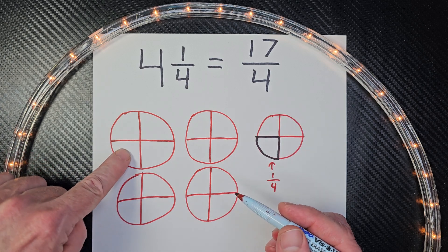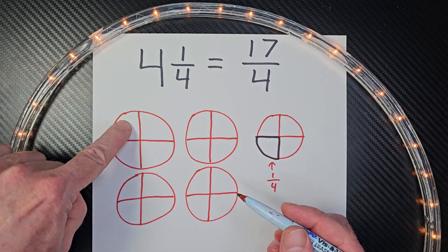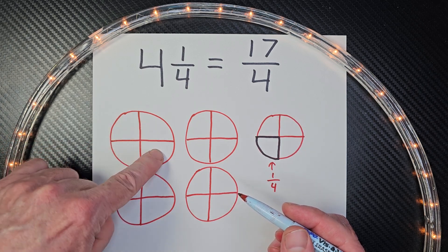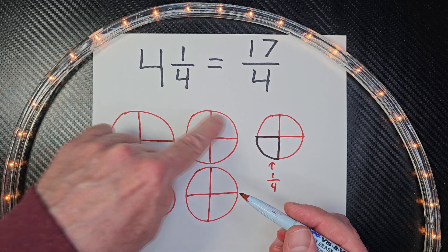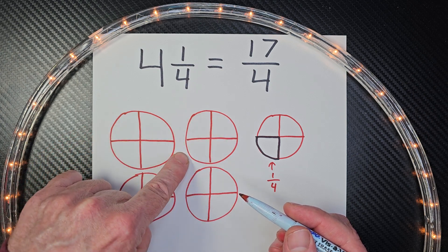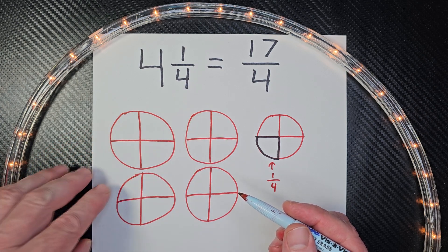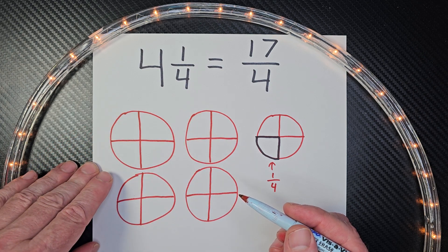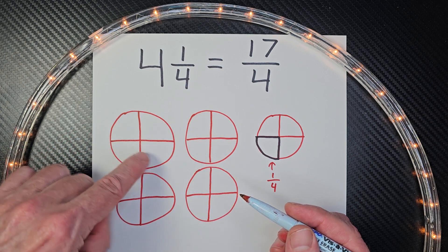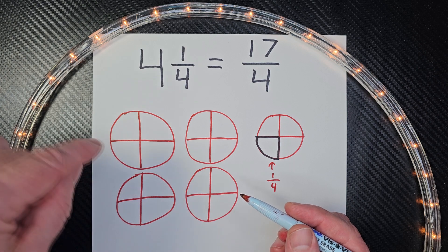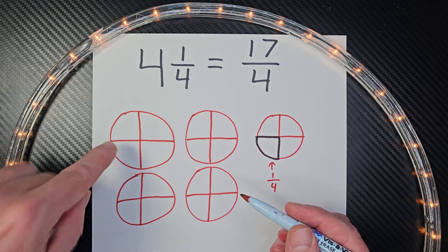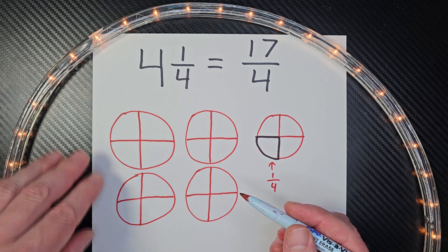These pieces right here — this is one-fourth, one-fourth, one-fourth, one-fourth — same thing. Let's go ahead and count the one-fourth pieces of my pies.